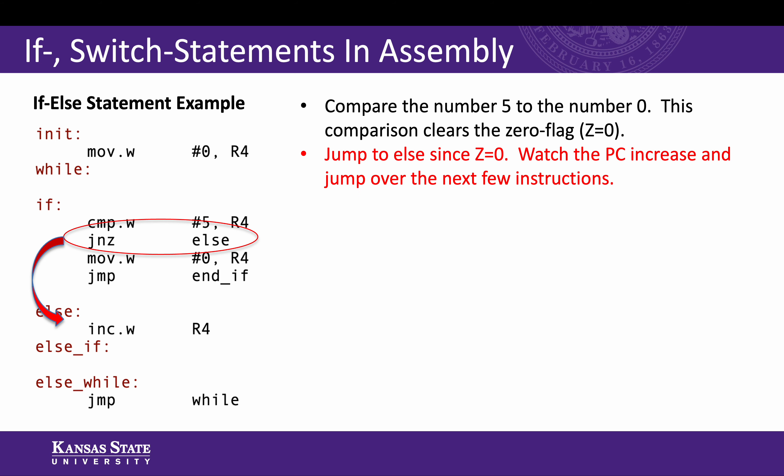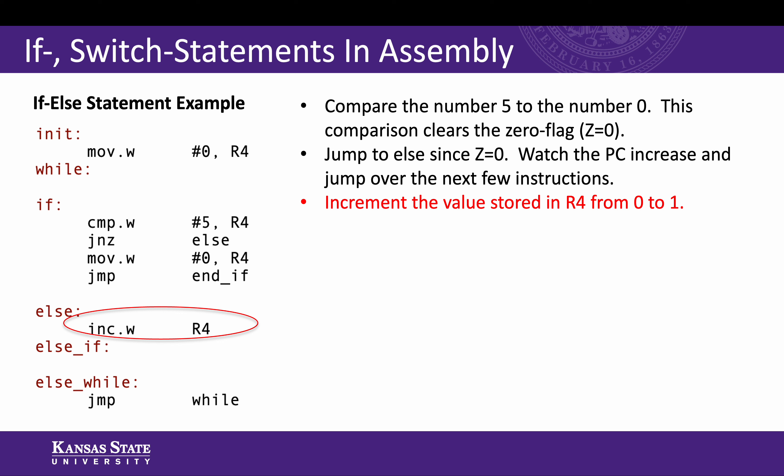The compare instruction compares the number five to zero, because r4 is initially containing the number zero. When that comparison occurs — five compared to zero — that's going to clear the zero flag, because the comparison is subtracting five and zero; they're not equal and you don't get zero, so Z equals zero. Now we're going to jump because this is jump-if-not-zero — jump to else. You can watch the PC increase; it's going to skip over the next few instructions. Here in the else block, we're going to increment the value stored in r4, which was zero, and so now we increment it to one.